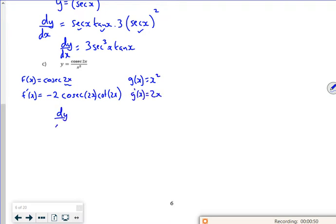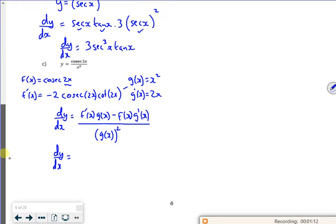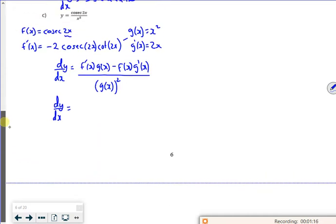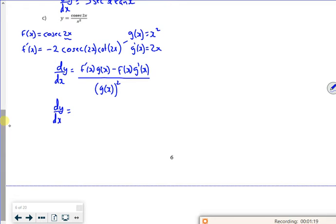And if you remember when you used the quotient rule, it's f dash of x g of x minus. So f dash of x g of x is that, it's them two times together, so it's the minus 2 cosecant 2x cot 2x times by x squared. So that's minus f of x times g dash of x, which is cosecant x times by 2x, so that's a 2x cosecant of 2x.